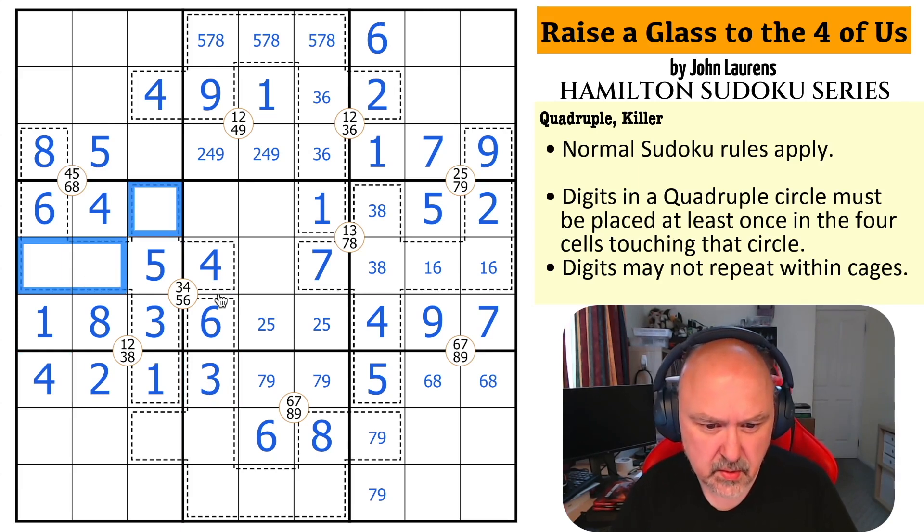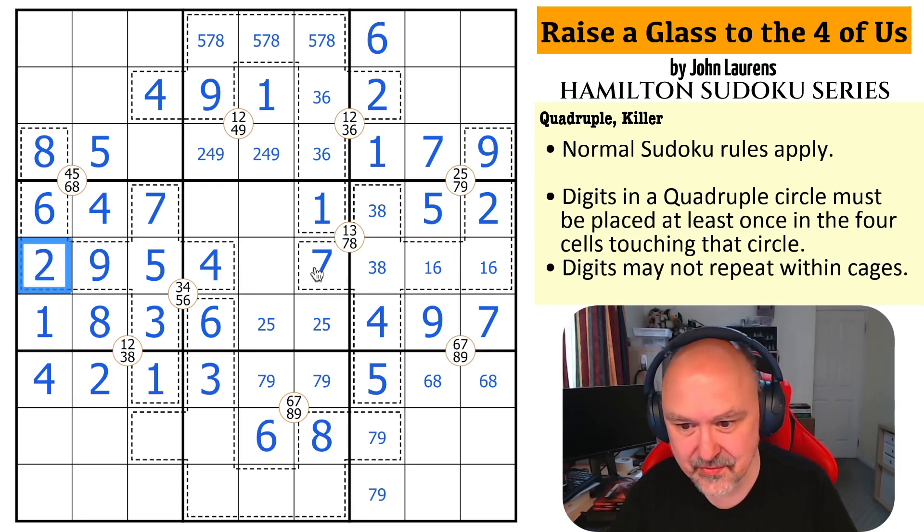This is a triple. 1, 2, 3, 4, 5, 6, 2, 7 and 9. There's no 7 there because of that 7. So, this is the 7. The 2 makes that the 9 and that the 2. 1, 2, 3, 4, 5, 6, 7, 3 and 8. Yep, that makes sense for that.